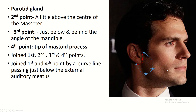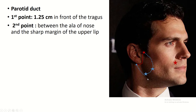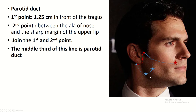For the parotid duct: the first point is the tragus, and the second point is the midpoint between the ala of the nose and the upper border of the lip. Join these points — the middle third of this line represents the parotid duct.